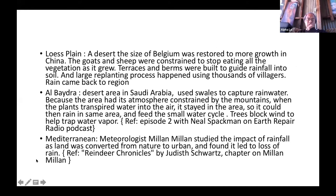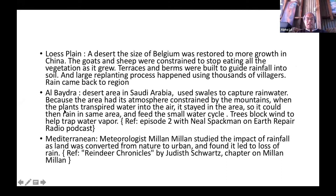There are a lot of different places that have had experience of bringing back the rain. In the lowest plain in China, a desert the size of Belgium was restored to growth. This happened because they helped stop goats and sheep from eating all the vegetation. Terraces and berms were built to catch rainfall, and a large replanting process took place. Over many years, rain has come back to that region.